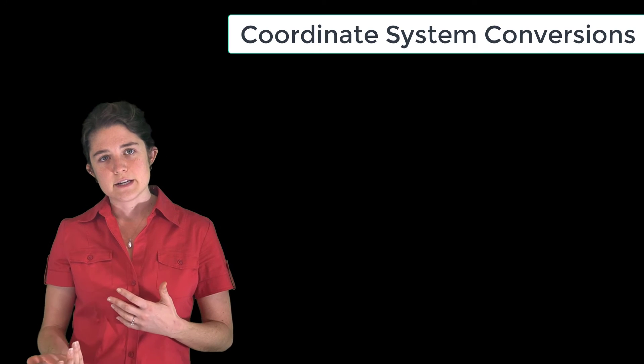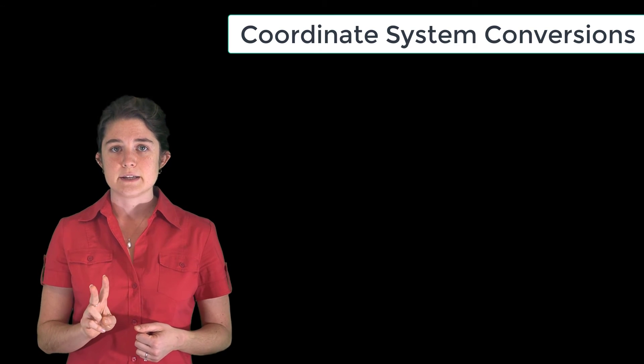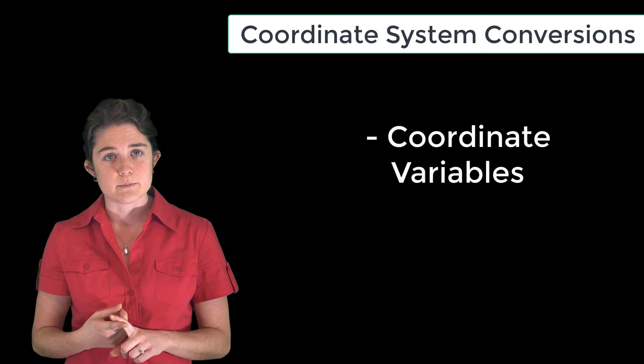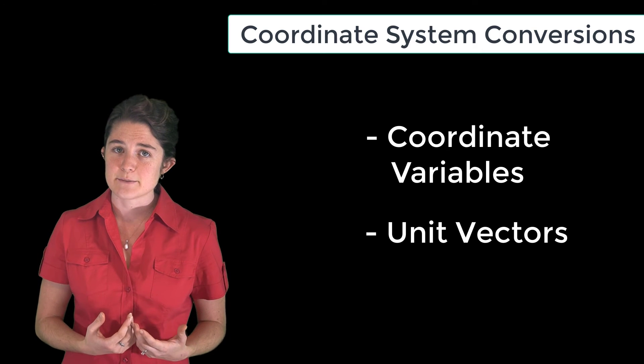If you want to convert a vector from Cartesian space to cylindrical space or vice versa, there are two parts you need to consider. You must convert the variables, and you must also convert the unit vectors. Luckily, these are both relatively simple operations.